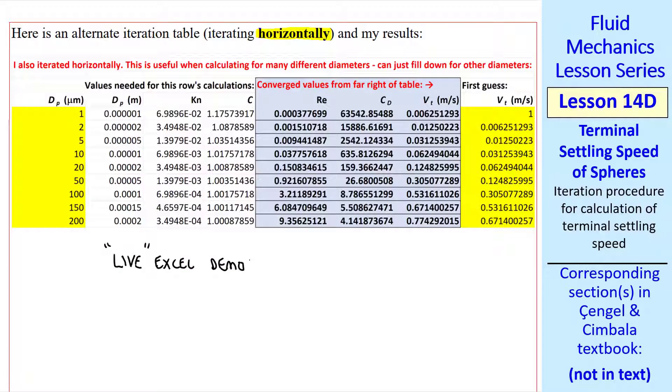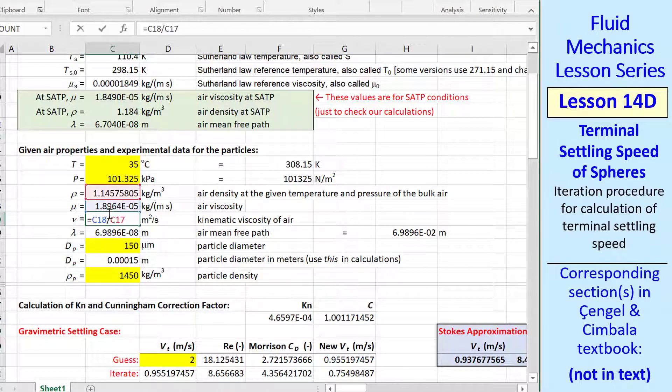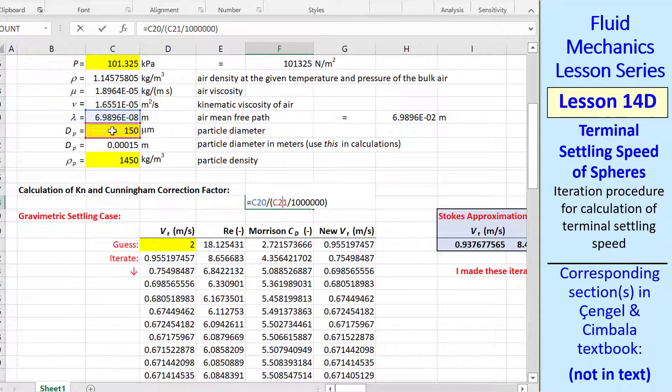Now I'll do a live Excel demo. Here's the Excel spreadsheet I used to generate all these values. I used the universal gas constant and the molecular weight of air to generate the specific gas constant, which I used to calculate the density. Here's g and the constants for the Sutherland law. These are just values at SATP for comparison. I calculate mu from Sutherland, and nu is simply mu over rho. I calculate lambda from the equation I showed. This yellow cell is dp, which I input as 150 microns. I convert to meters, and here's the particle density. I calculate Knudsen number here, just the ratio of these two values, being careful with units.